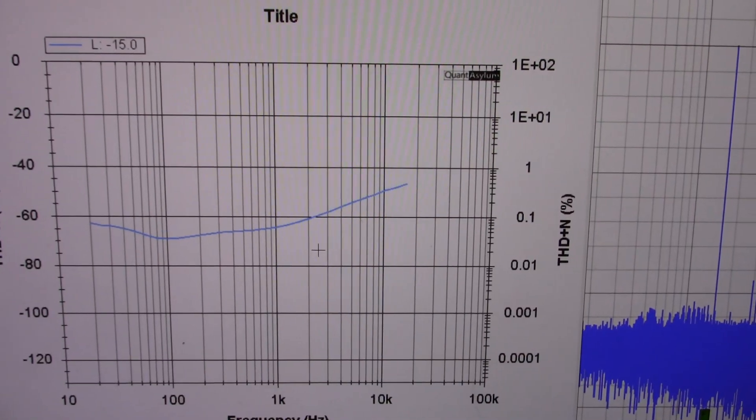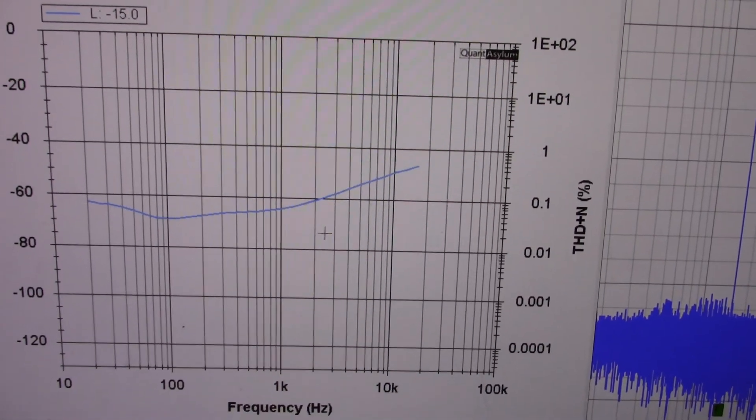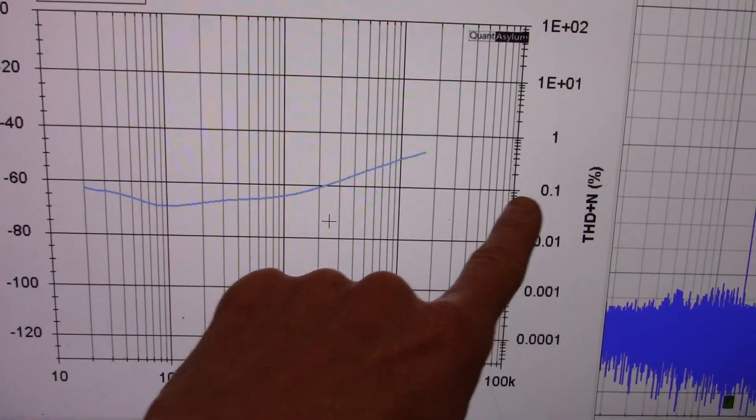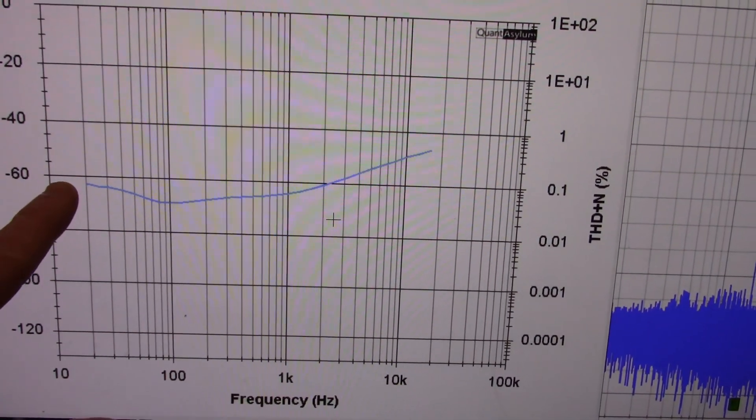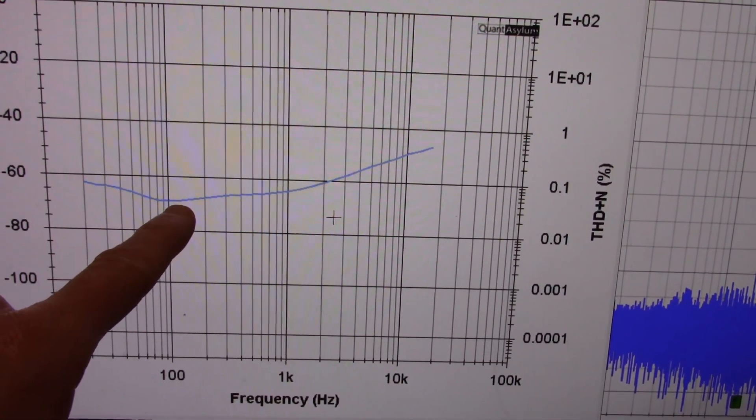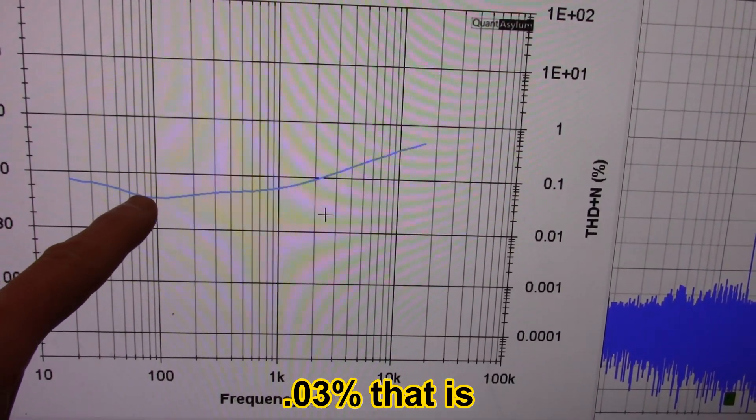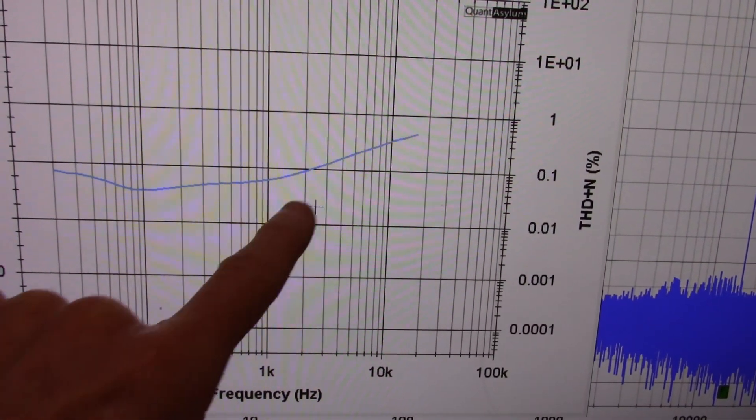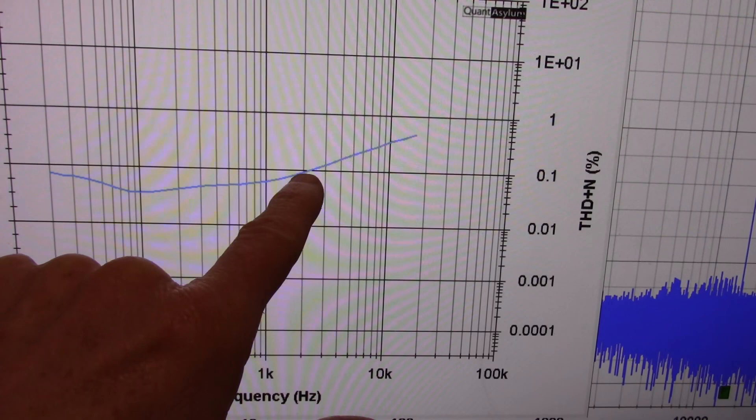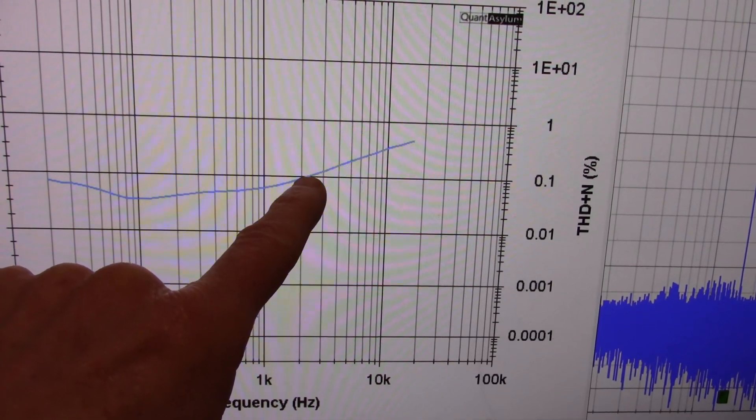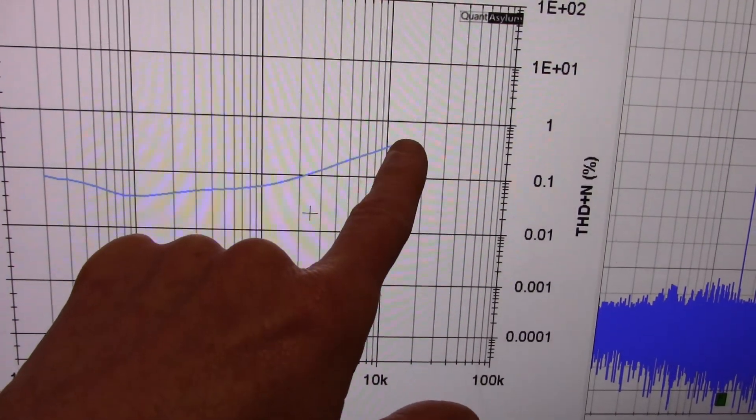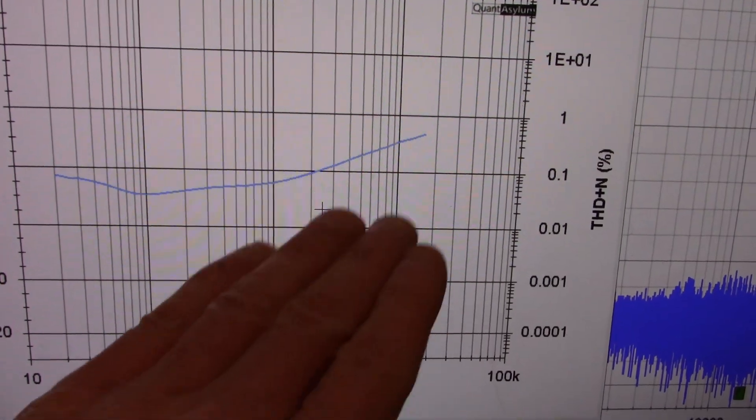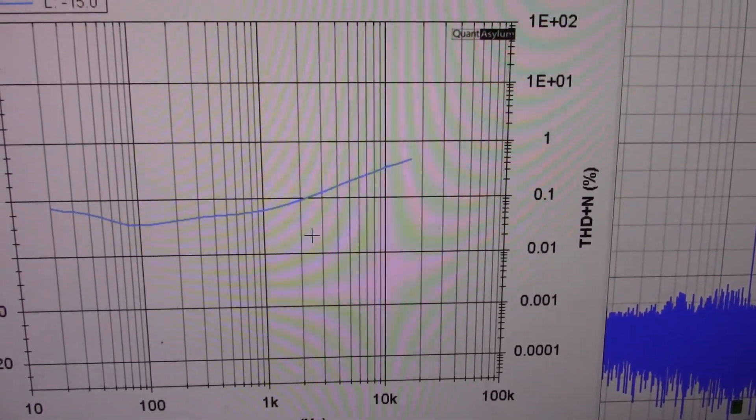Here's the distortion versus frequency. Not too bad. And it's under 0.1%. Dips down as low as about 0.3 around 100 hertz. At 1k, it's still below, around 2k, just above 2k. It goes above 0.1 and ends at about 0.3% at 20k. And that's normal for these types of chips.